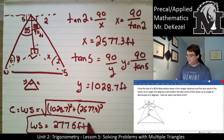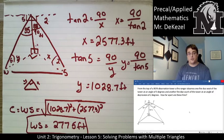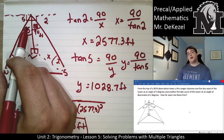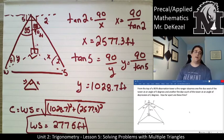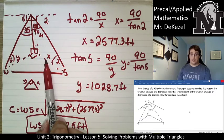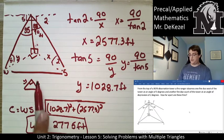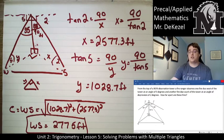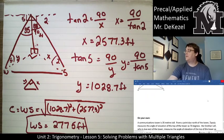With sides X and Y as legs A and B of a right triangle, we use the Pythagorean theorem to find WS, the hypotenuse. C equals the square root of A squared plus B squared, so WS equals the square root of 1,028.7 squared plus 2,577.3 squared, giving WS equal to 2,775 feet. That is the distance between the fire to the west and the fire to the south.